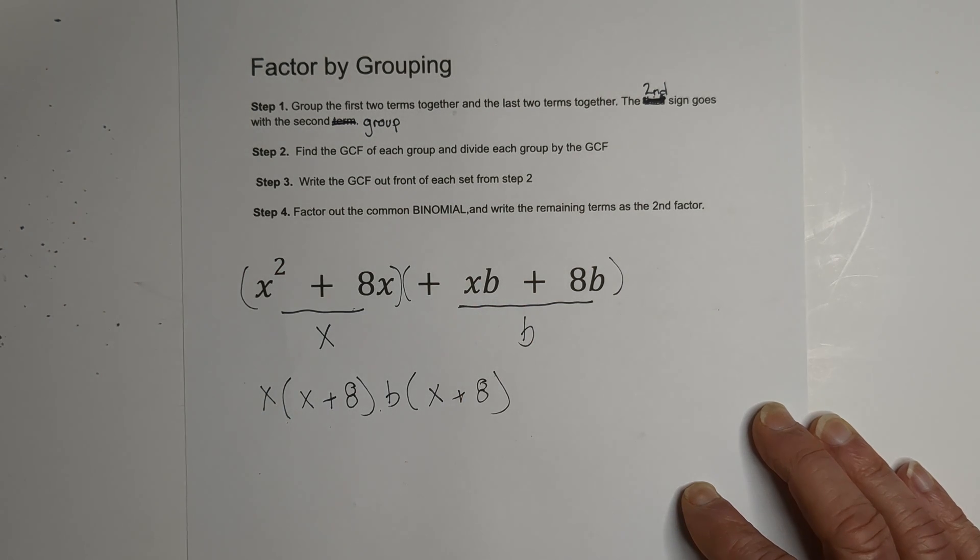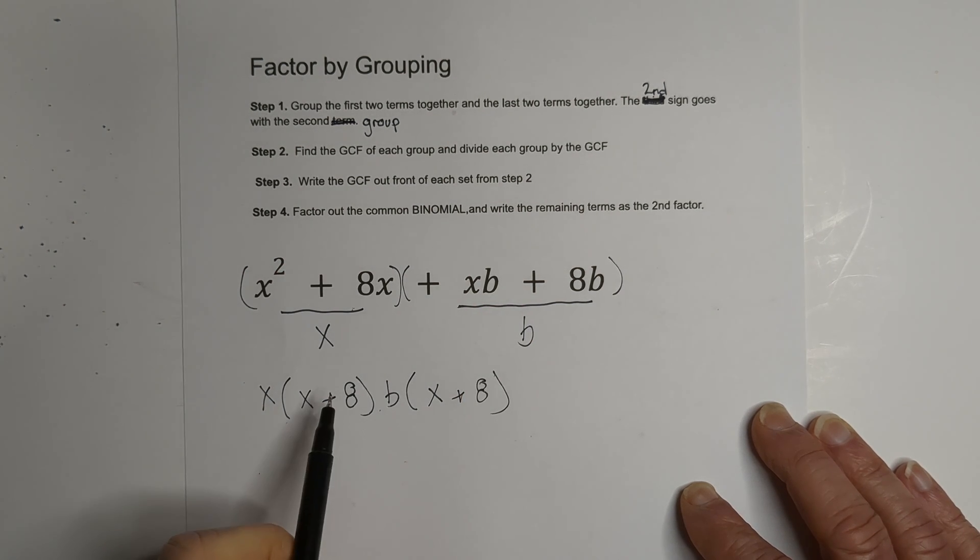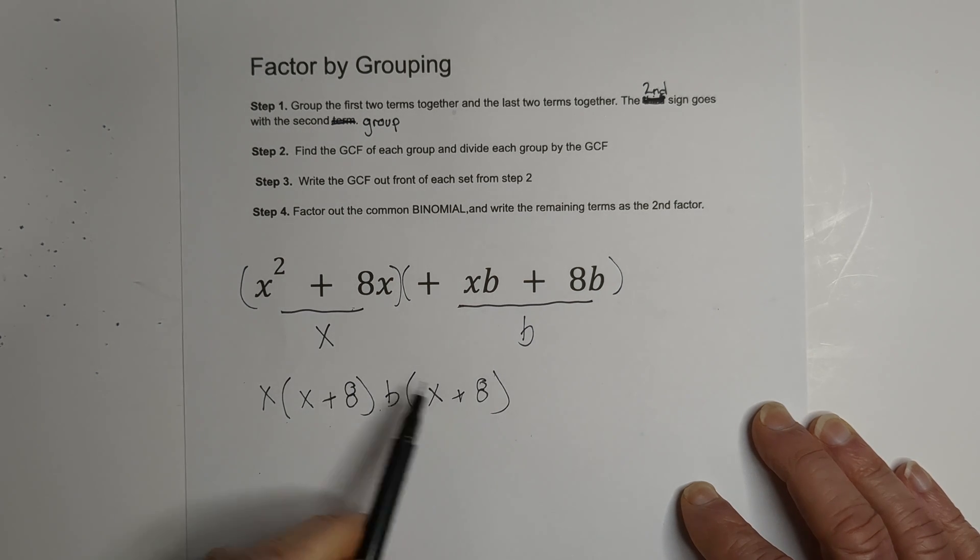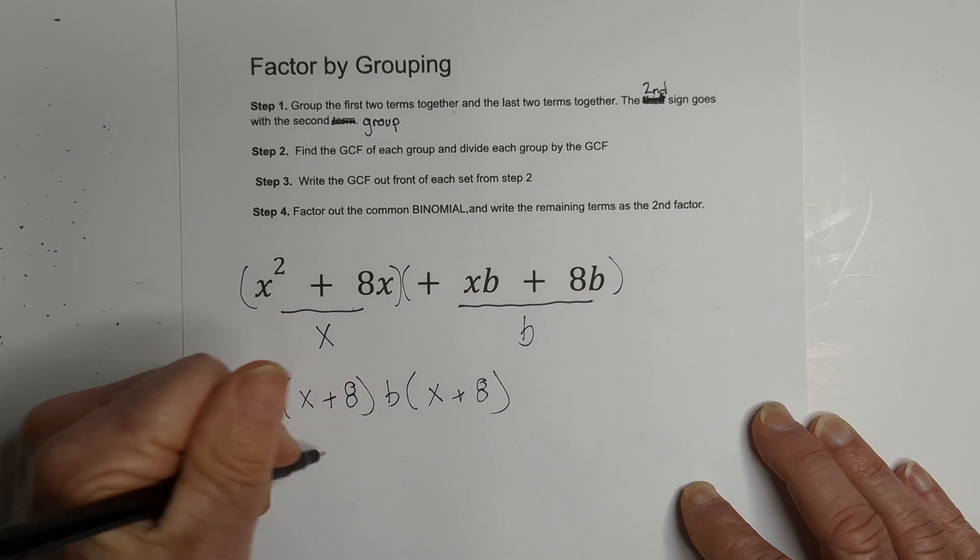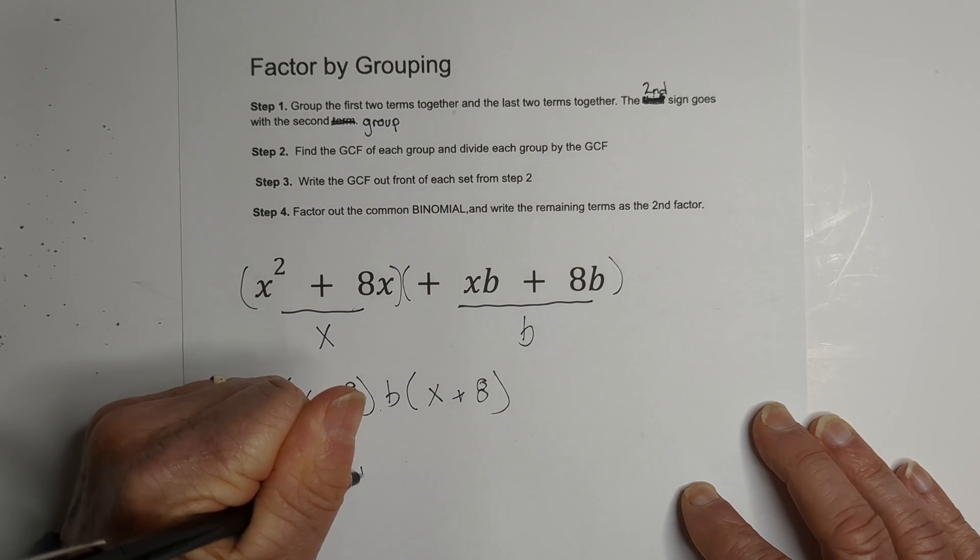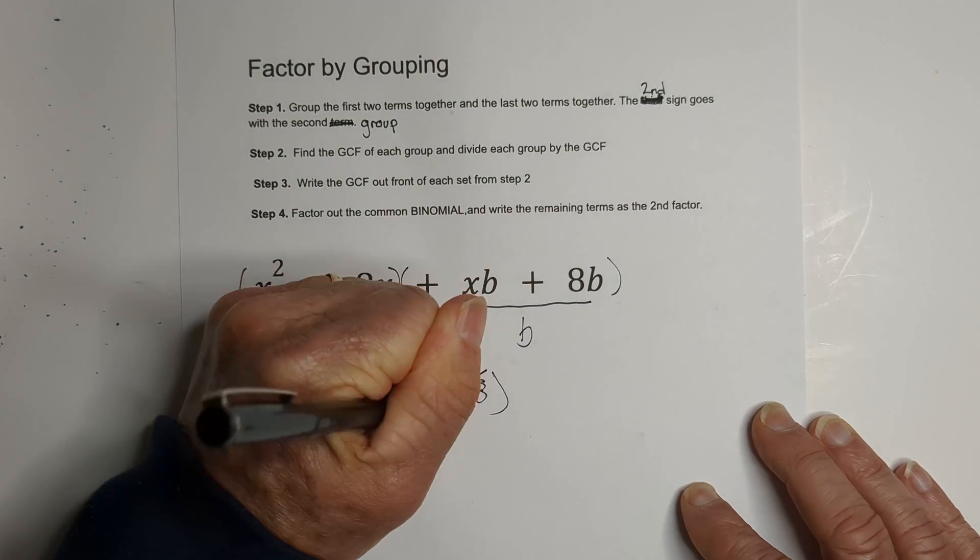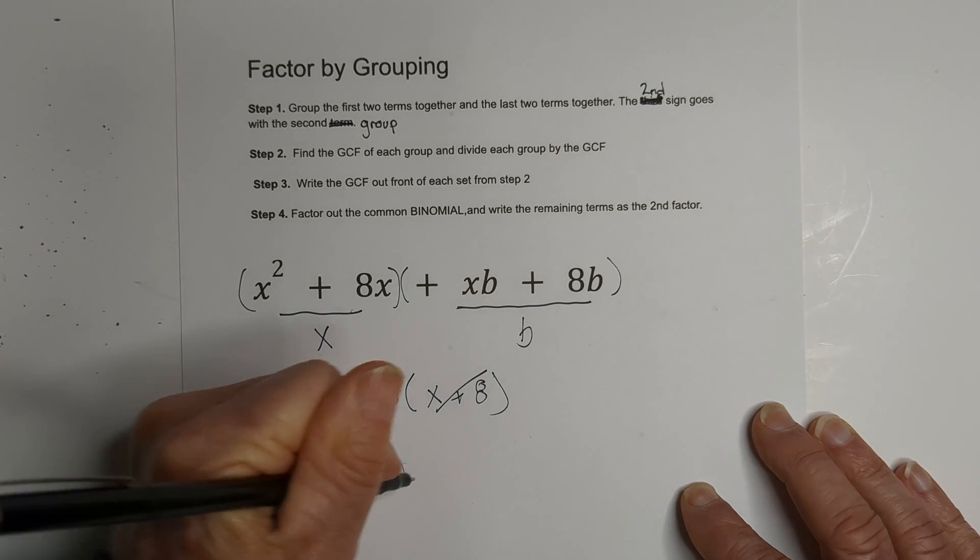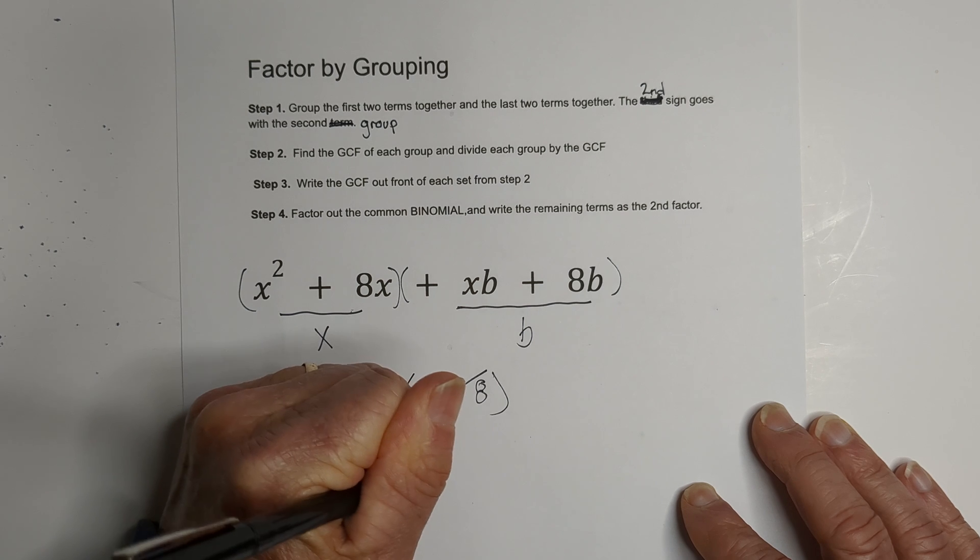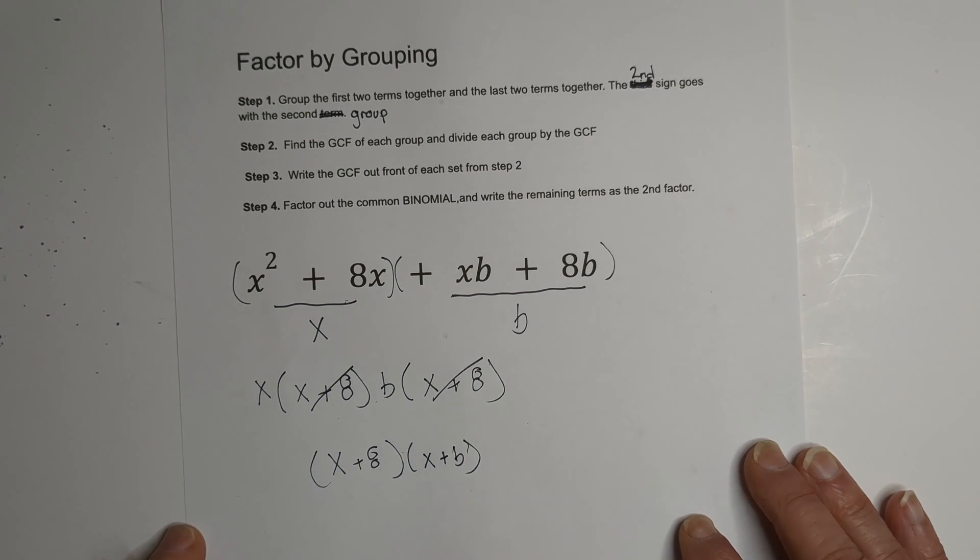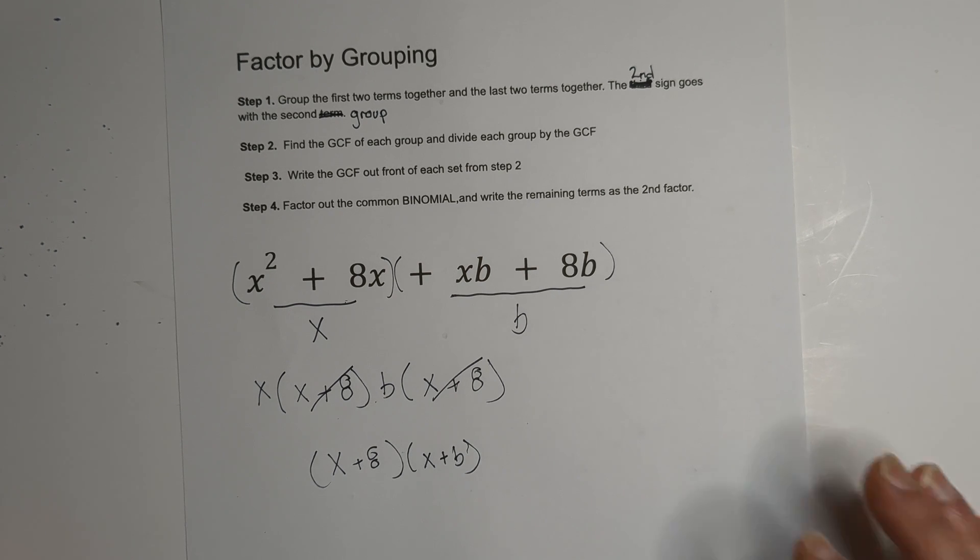Now if you've done it correctly, these two binomials, or if you can factor using grouping, these will be the same. So now what we're going to do is we're going to write this common binomial out front. We're going to cancel them. And what is remaining? What is remaining is x plus b. So there is the first example factored out using grouping.